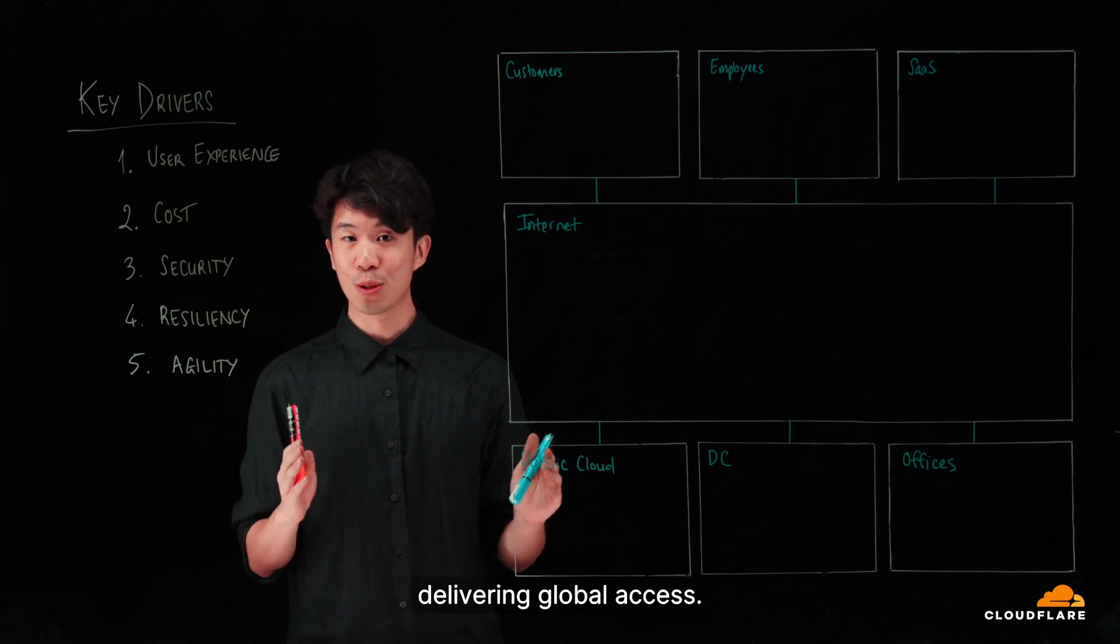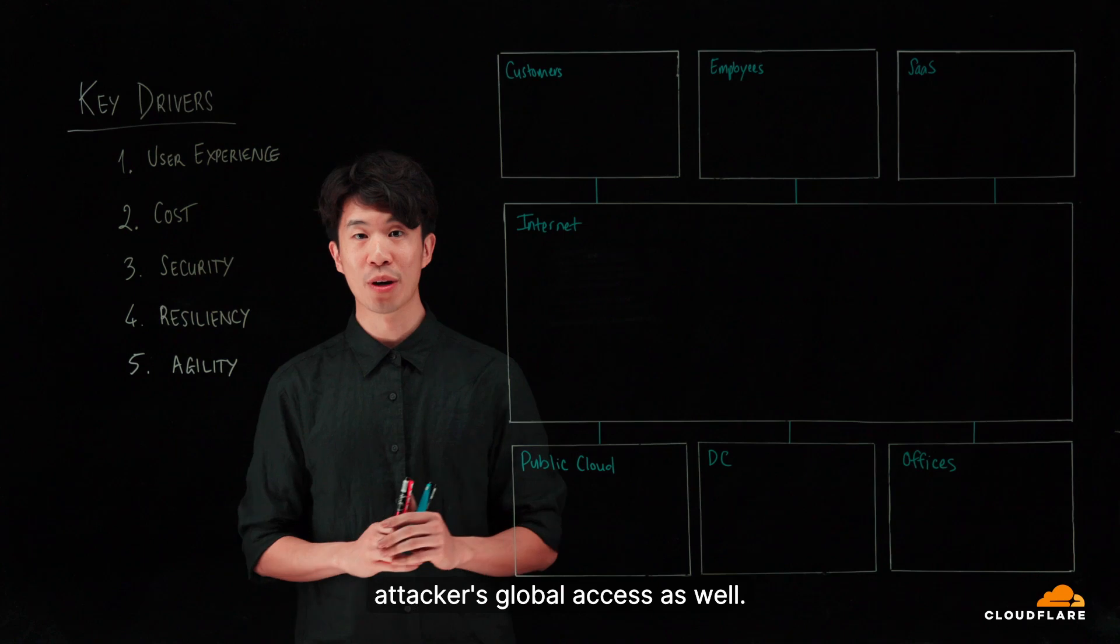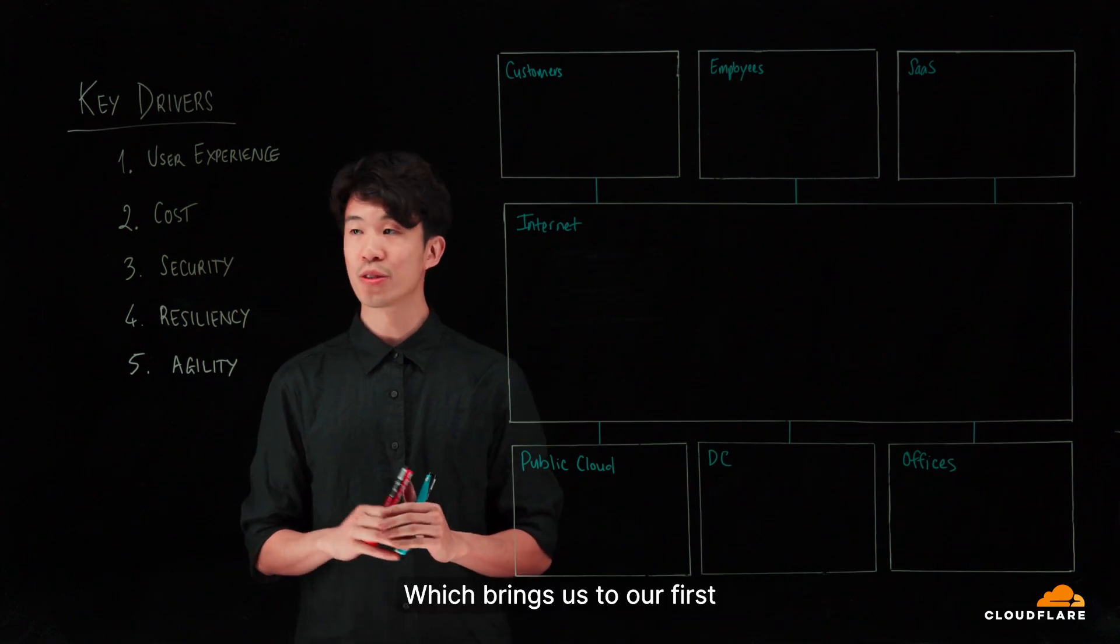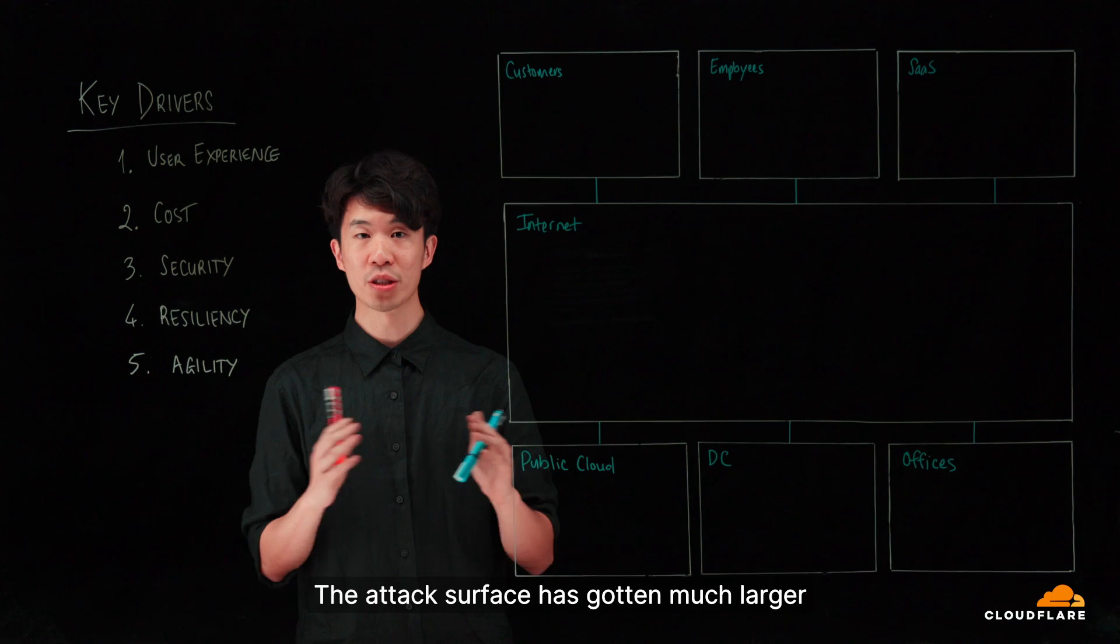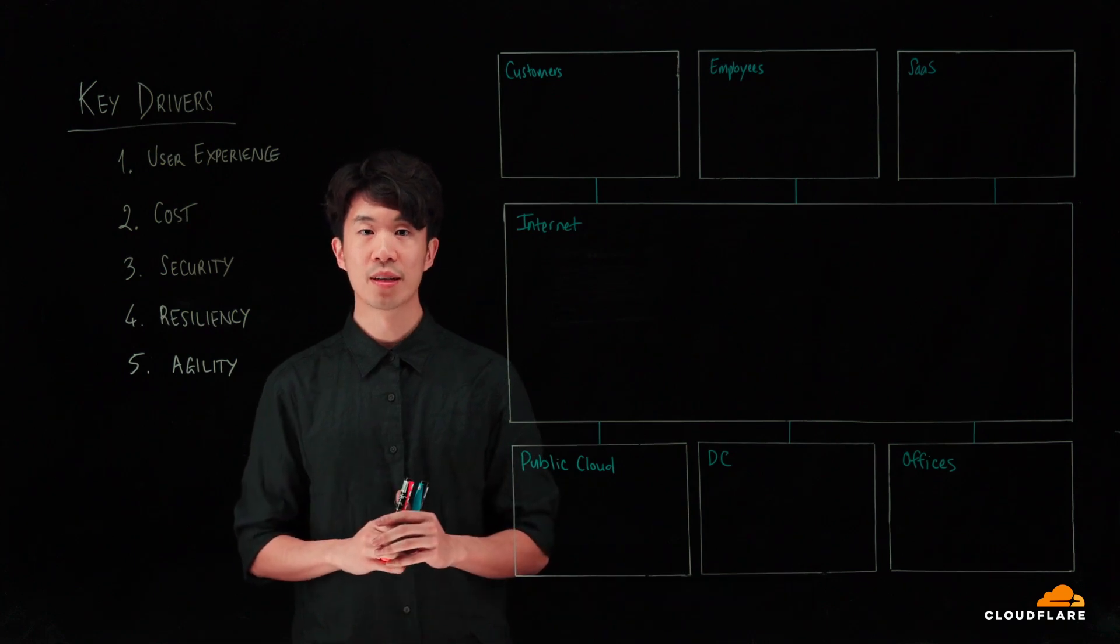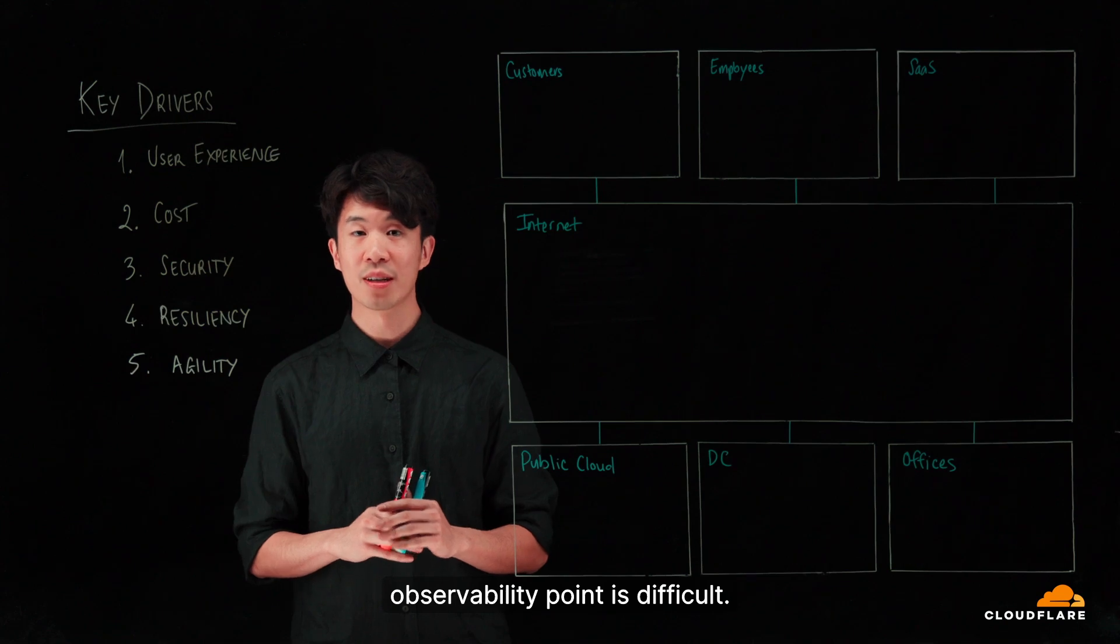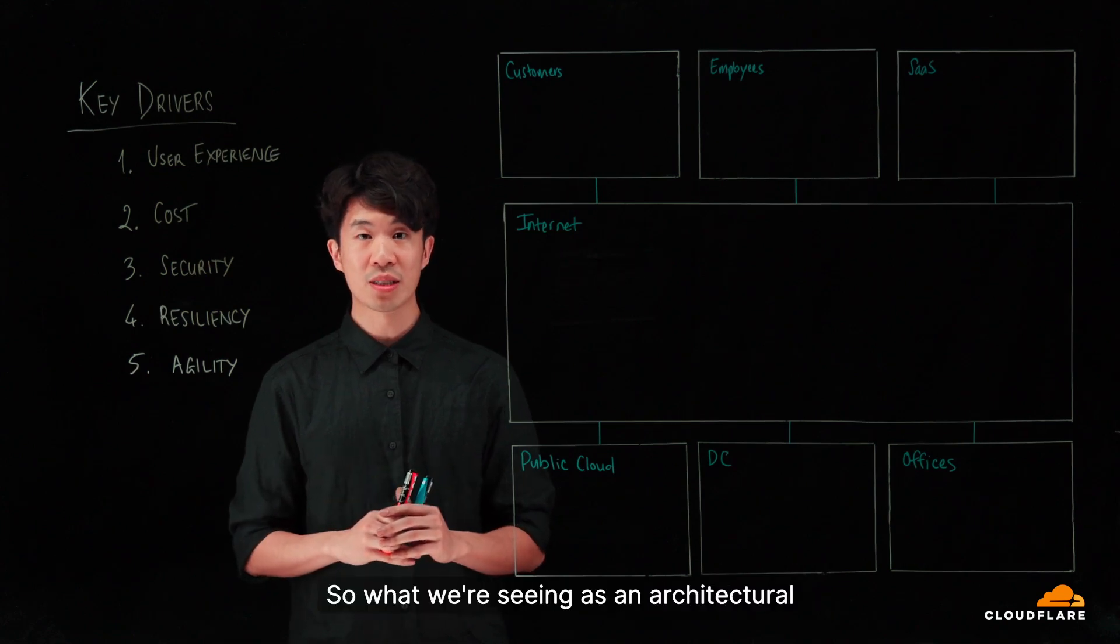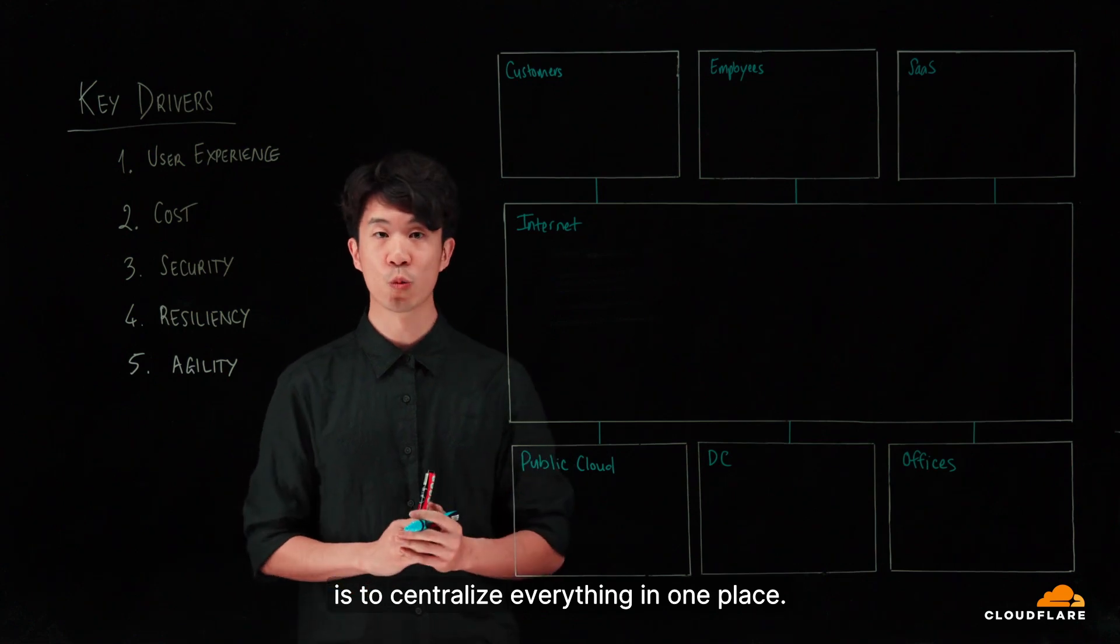The good, of course, is delivering global access. And the bad, of course, is delivering the attackers global access as well. Which brings us to our first challenge, which is security. The attack surface has gotten much larger and much more sophisticated. Maintaining even a basic security posture, where you have a central observability point, is difficult. So what we're seeing as an architectural response to this challenge is to centralize everything in one place.